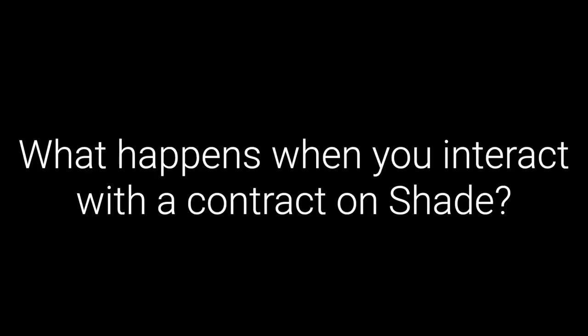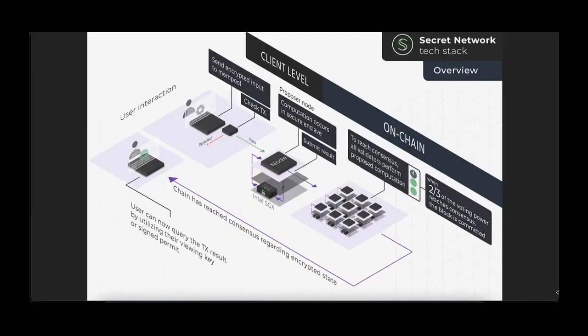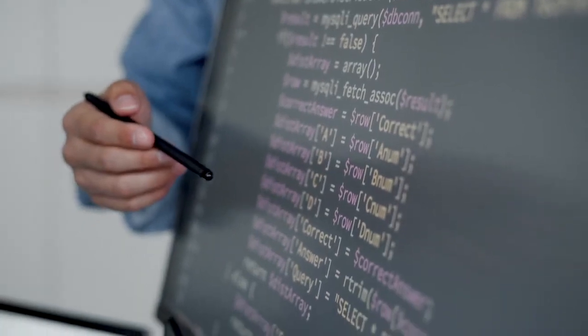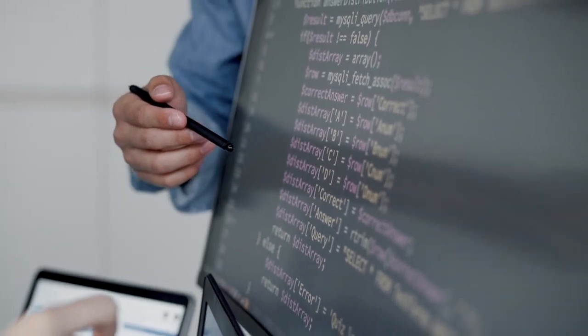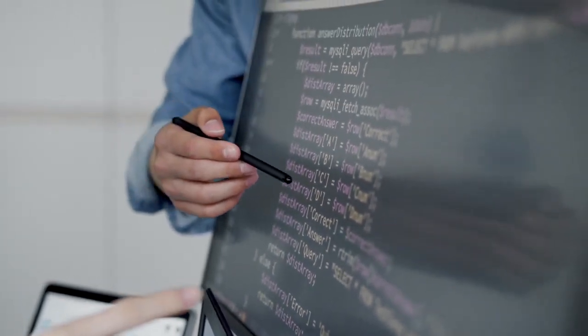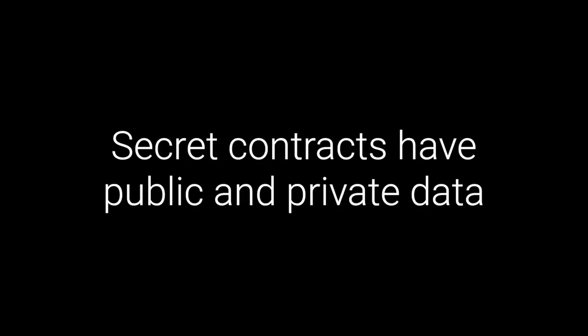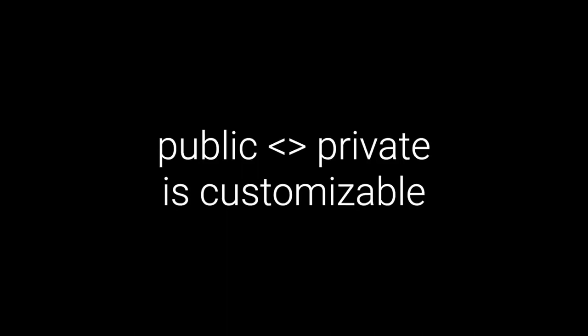Let's talk about what happens when you hit the light switch — metaphorically, of course. What is the flow of activity for a transaction on Shade Protocol when you interact with a secret contract? Here's a picture of the user flow. The first step — or really step zero — is that developers write and deploy secret contracts, which are executed by the validators. You've got to have a contract to interact with, and it's important to remember that secret contracts have both public and private data.